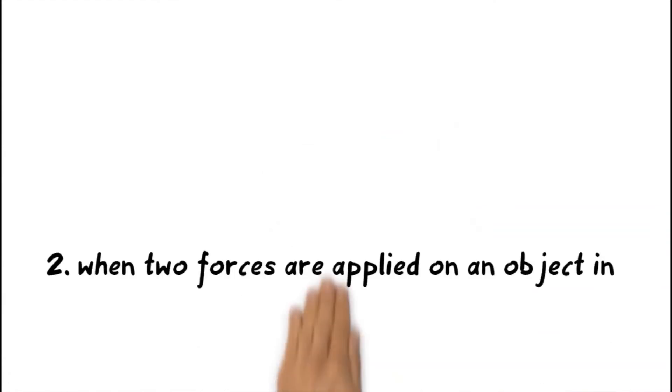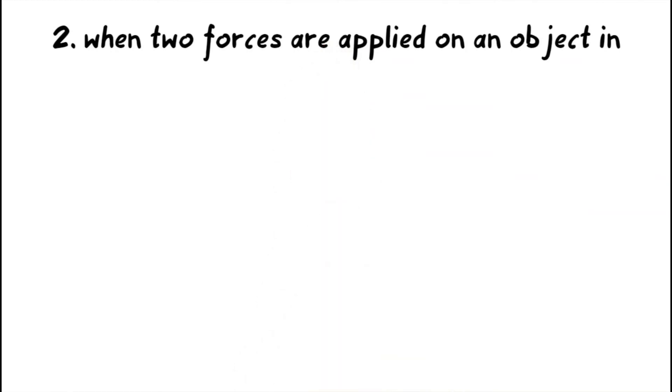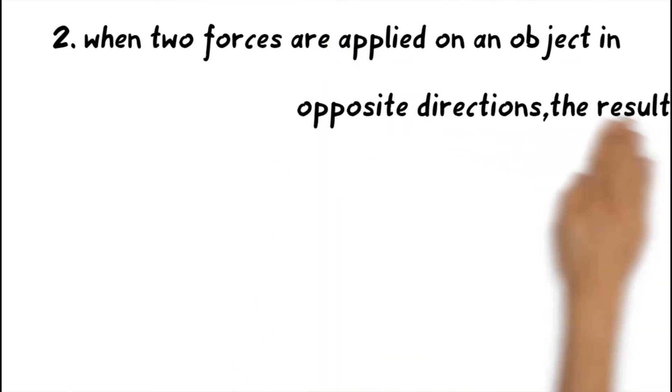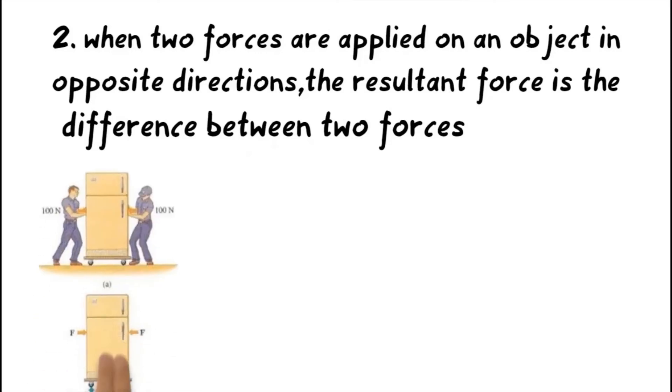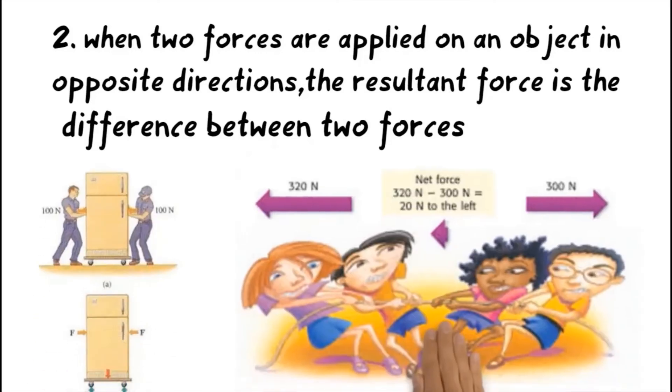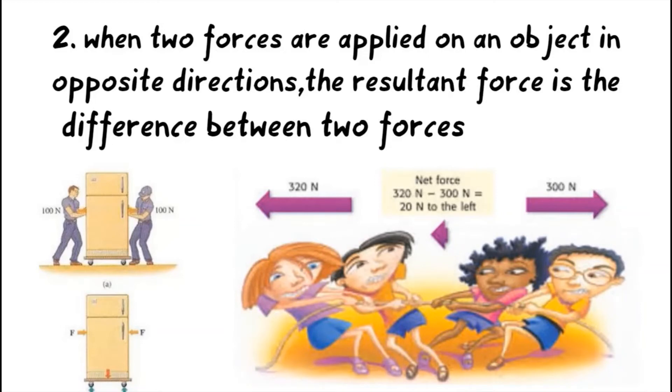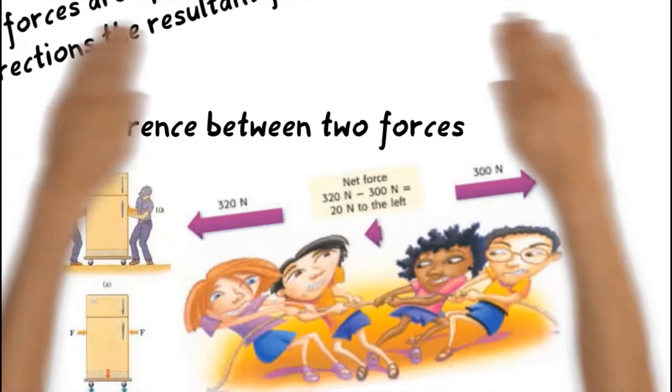And in second case, when two forces are applied on an object in opposite direction, the resultant or net force is the difference between the two forces. Here you can see in the picture that two men pushes a heavy box from opposite direction by applying exactly equal force. Therefore, net force will be zero. And in second picture, two opposite and unequal force act on the row. So the resultant force will be the difference between these two forces.